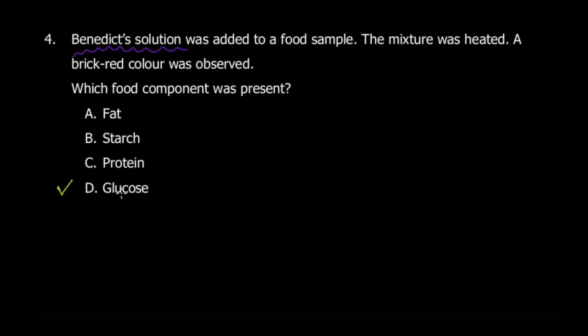The key is you're told this is Benedict's solution, which is used to test for reducing sugars. Since the color changed from pink to brick red, reducing sugars are present, so the answer is glucose. For fat, you rub on special paper and when it becomes translucent, that indicates fat. For starch, you use iodine solution. For protein, you use the biuret test.